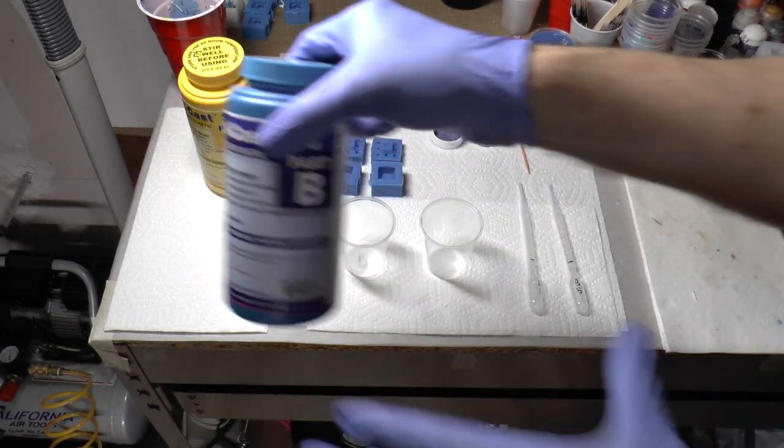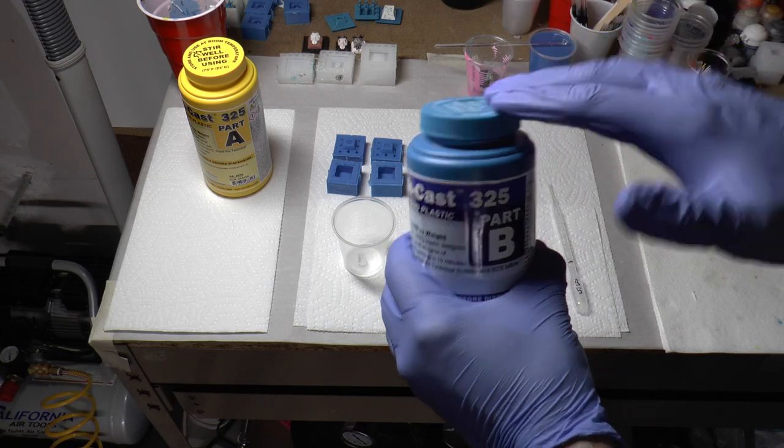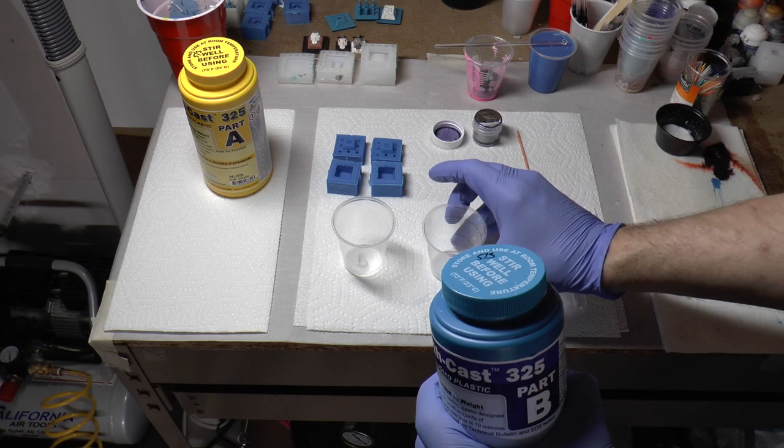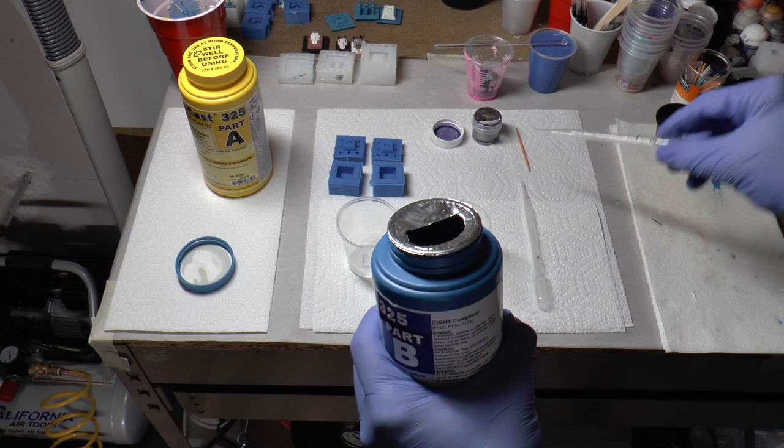So with that in mind, we're going to dive right into it. There we go. That's ready to go. So I'm going to pour the part B in one side. I usually use these cups right here that are not marked.